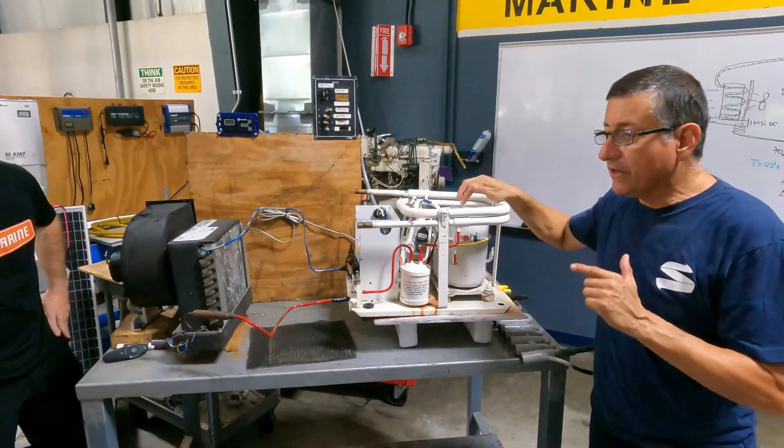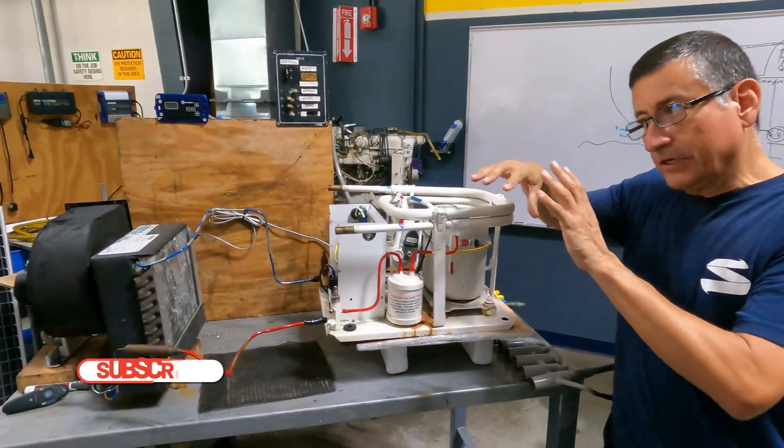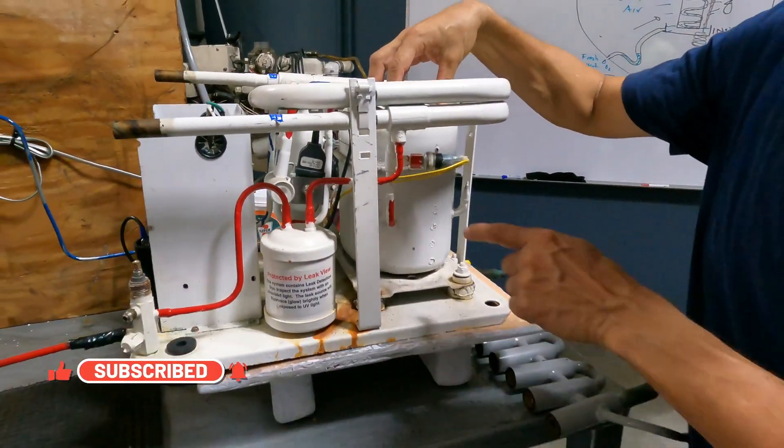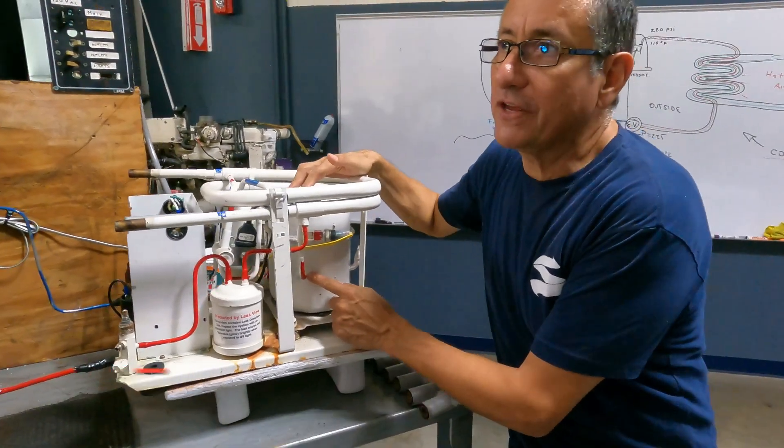We are going to follow the path of the refrigerant and try to understand that unit. The compressor internally compresses the refrigerant, and this is the discharge of the compressor.